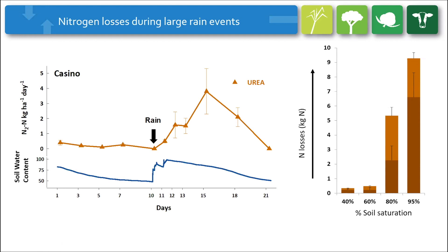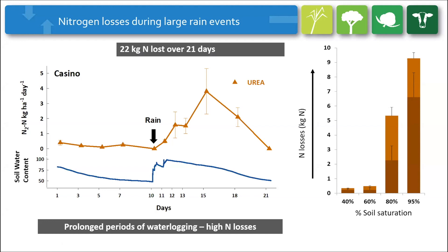From Casino, looking at our daily nitrogen loss rate after a rain event - the blue line is water content in the soil. After a rain event of over 120 millimeters, our N2 losses - the dinitrogen gas - go up to over four or five kilos per day once the soil becomes saturated. This adds up to quite substantial quantities. In this particular spring scenario, we're looking at 22 kilograms of nitrogen lost over 21 days, really driven by those prolonged periods of waterlogging.